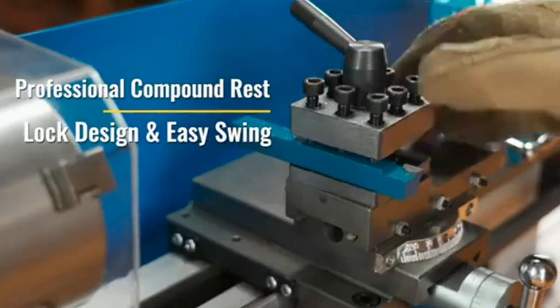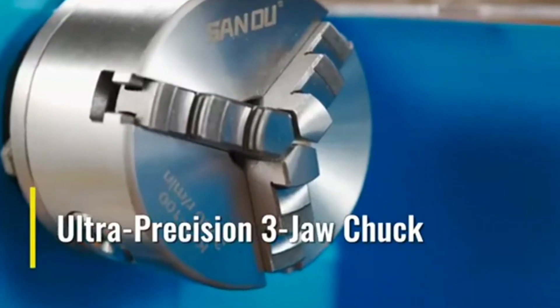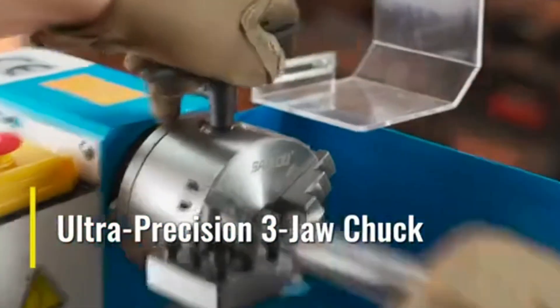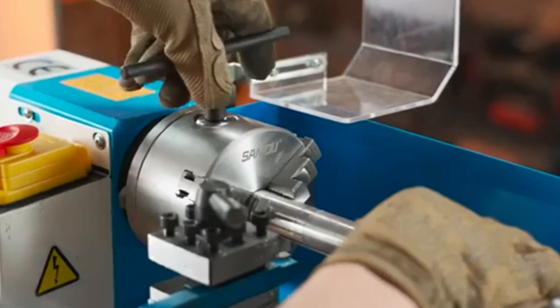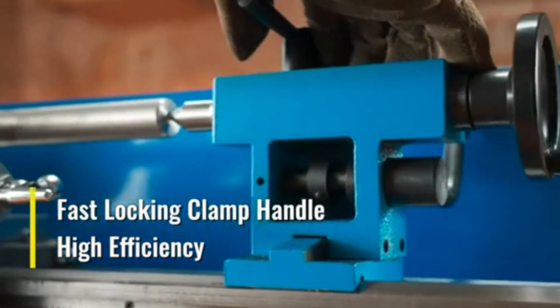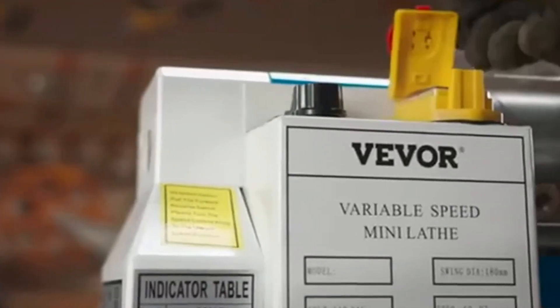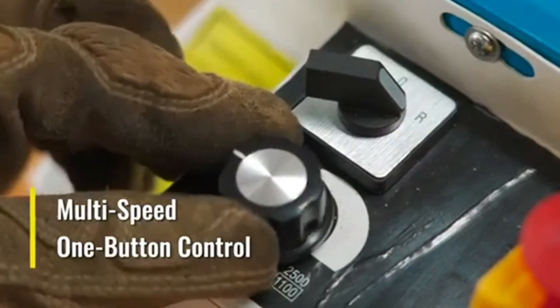It features an adjustable speed, 0 to 2,500 rpm, a swing-over bed of 7.09 inch slash 180 mm, a 13.78 slash 350 mm center distance, and supports both inch and metric threading. The 550W DC single-phase motor ensures smooth operation even with tougher materials.